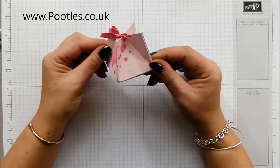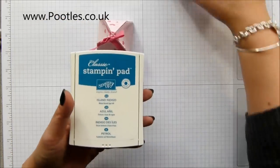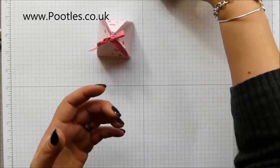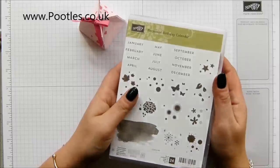I am going to use, this one is Pink Pirouette and Melon Mambo, and I'm going to use Island Indigo and Pool Party for the next one. And my very beautiful perpetual birthday calendar stamp set. I love it.